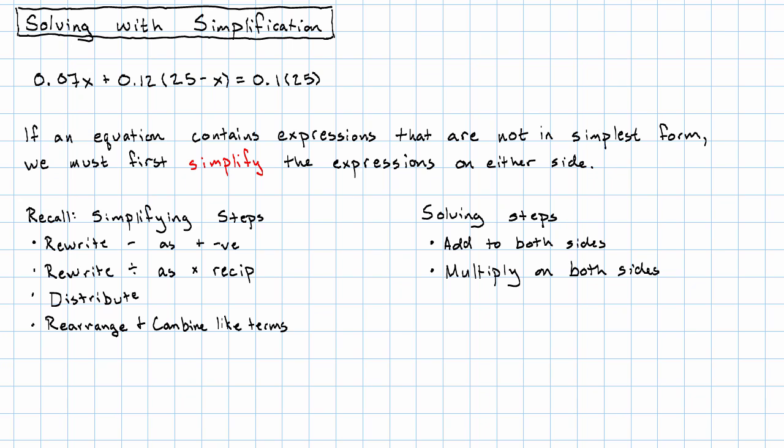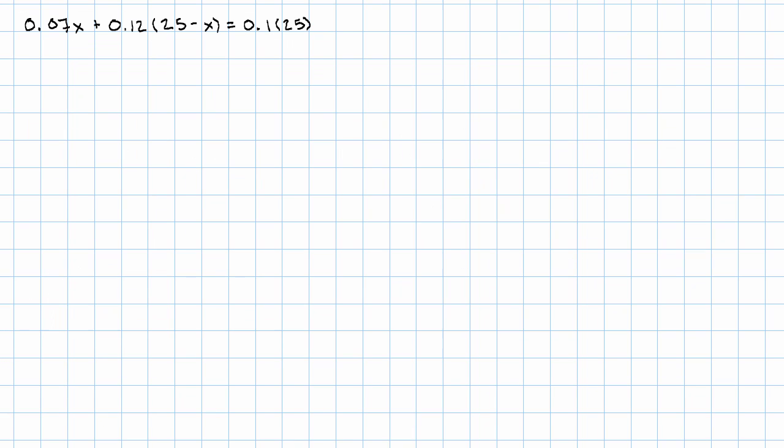The expression on the left starts at 0.07 and ends at the end of these parentheses, right? It's everything to the left of the equal sign. So we have 0.07x plus 0.12 times (25 plus negative x). I've gone ahead and written that as plus the negative.